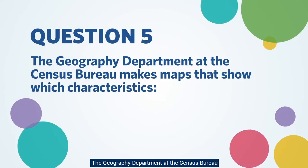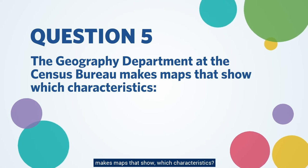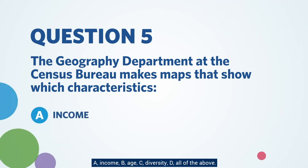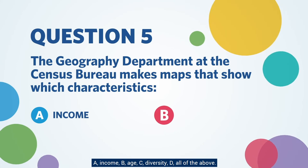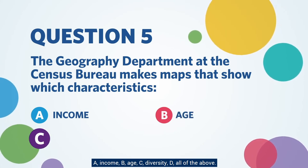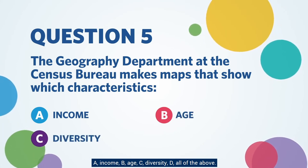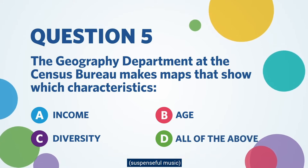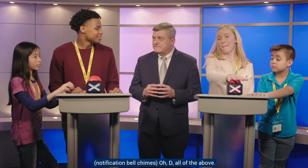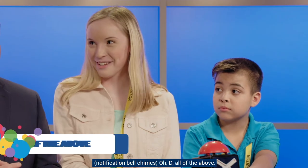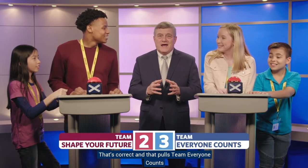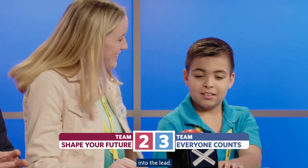Question number five: The geography department at the Census Bureau makes maps that show which characteristics — A) income, B) age, C) diversity, or D) all of the above? D — all of the above. That's correct, and that pulls Team Everyone Counts into the lead.